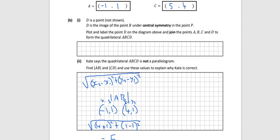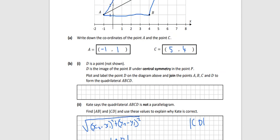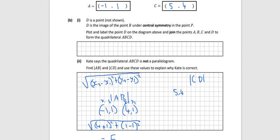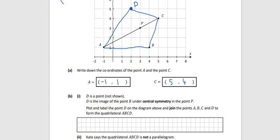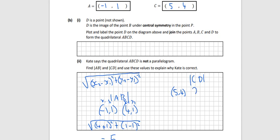Now I'll do it for CD, from C to D. Using the same formula with point C at (5, 4) and point D at (2, 5) - across to 2, up to 5. Same formula: x2 minus x1. So 2 minus 5 squared plus 5 minus 4 squared. That gives us 9 plus 1, which is root 10. And root 10 is not the same as 5.